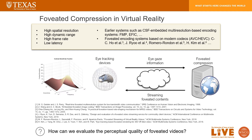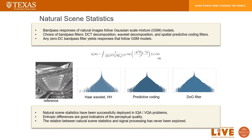Naturally, it is very important to develop algorithms that can automatically evaluate the perceptual quality of foveated videos. Previous works have shown that the bandpass responses of natural images followed Gaussian scale mixture models, where the bandpass filters can be DCT decomposition, wavelet decomposition, and spatial predictive coding filters. In fact, any zero-DC bandpass filters yield responses that follow GSM models. Natural scene statistics have been successfully deployed in IQA or VQA problems, and entropic differences of the GSM model between the reference and the distorted image are known to be good indicators of perceptual quality.